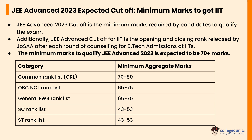In the OBC-NCL and General EWS rank list, minimum aggregate marks are expected to be between 65–75. In the SC and ST rank list, minimum aggregate marks required are expected to be between 43–53.